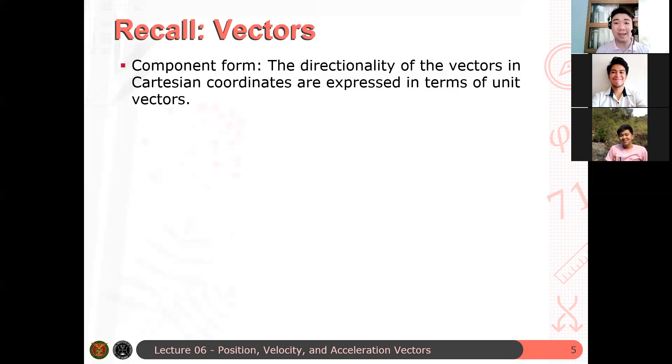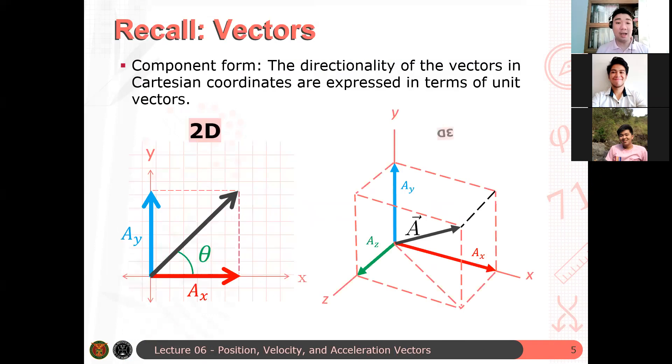Now, so recall your vectors. Again, your component form of vectors. So your i-hat and j-hat form or unit vector form, the directionality of the vectors in Cartesian coordinates are expressed in terms of your unit vectors, i-hat, j-hat, and k-hat. So for example, in 2D, we have a vector, an arbitrary vector in two dimensions can be written as a sum of the x component multiplied by, or scaled, where the x component scales the unit vector i-hat of the same magnitude, and plus a_y j-hat, which means that if you have a unit vector in the y direction, j-hat, you scale it with some component a_y. Similarly, we can also define our vector in 3D space, where a 3D is some a_x i-hat plus a_y j-hat plus a_z k-hat.